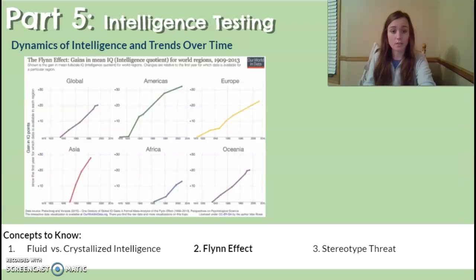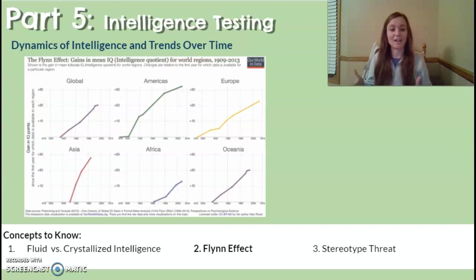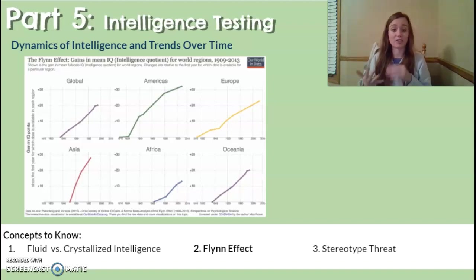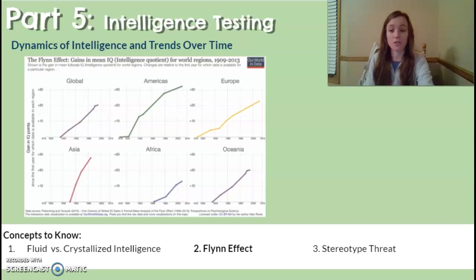The Flynn effect is a worldwide phenomenon showing that average intelligence has been growing year after year — we are essentially getting smarter globally. Researchers believe this is caused by several factors: better health, better nutrition, greater access to education, a rising standard of living globally, and perhaps even increased familiarity with test-taking situations.